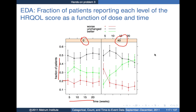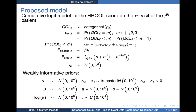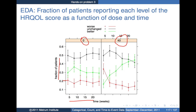Since we're constructing a cumulative logit model, it's useful to visualize it in terms of the cumulative logit — plotting the fraction of patients reporting values less than or equal to one or less than or equal to two. Better is green, unchanged is black, and worse is red. It was scaled from one being worse to three being better.